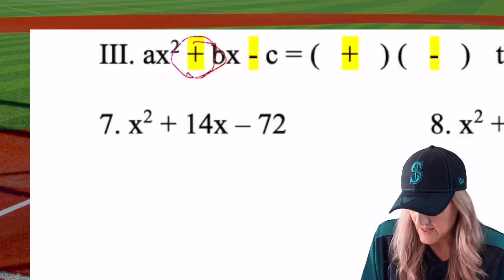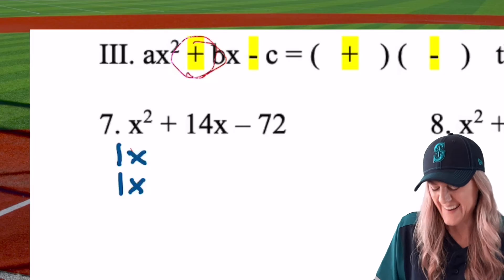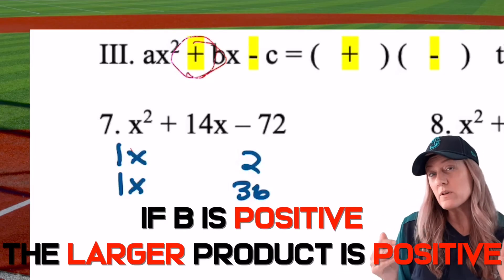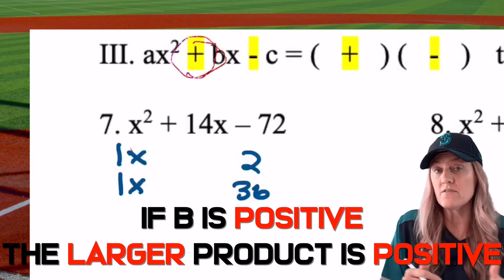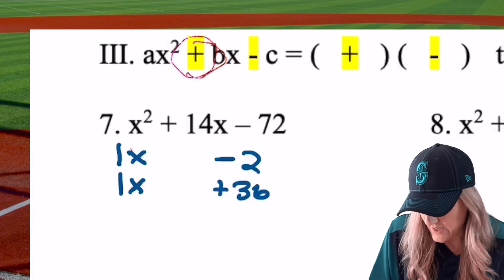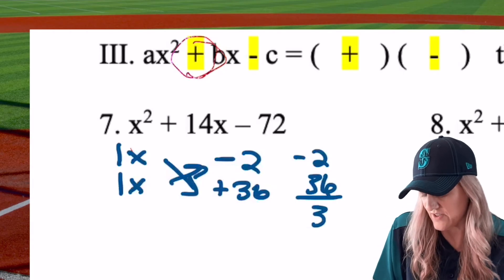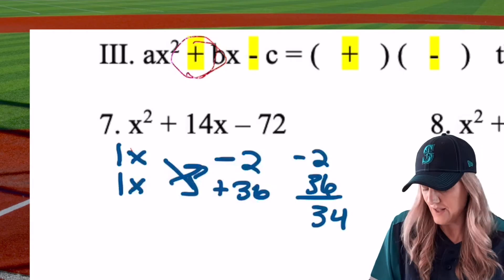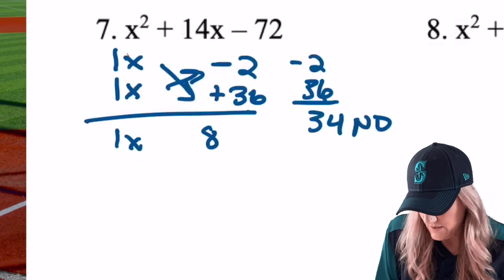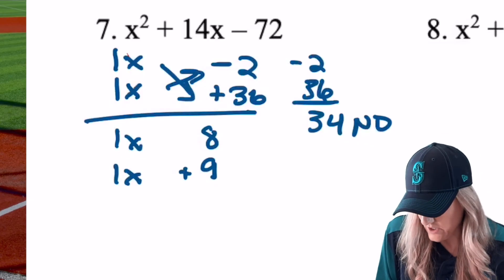Let's do number seven. Same process, 1x squared. So 1x times 1x. And we have factors for negative 72. I'm just going to throw it out there, 2 and 36. And then what was the rule? If b is positive, the larger product is going to be positive. So I'm going to make that 36 positive and the 2 negative. When I do crisscross, I have negative 2, positive 36. Oh, that's 34. No go. Let's try another set. I think I got it. 8 and 9. 1x, 8. 1x, 9. Which one's positive? The larger product. So boom. Oh, shoot. I don't even have to finish this one. And this didn't work out.